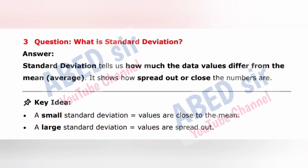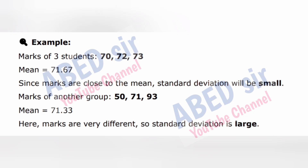Next important short question: What is standard deviation? Answer: Standard deviation tells us how much the data values differ from the mean. It shows how spread out or close the numbers are. Key idea: a small standard deviation means values are close to the mean; a large standard deviation means values are spread out. Example — marks of 3 students: 70, 72, 73. Mean = 71.67. Since marks are close to the mean, standard deviation will be small.